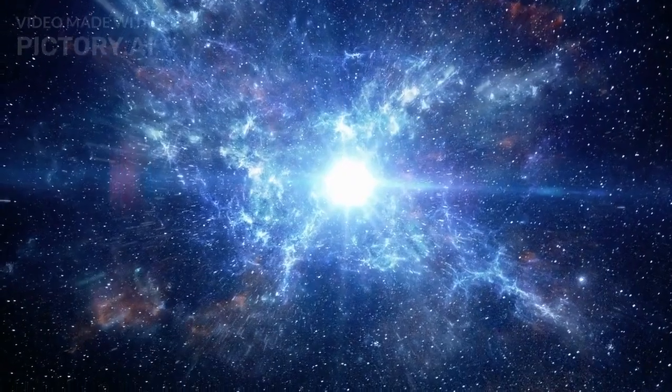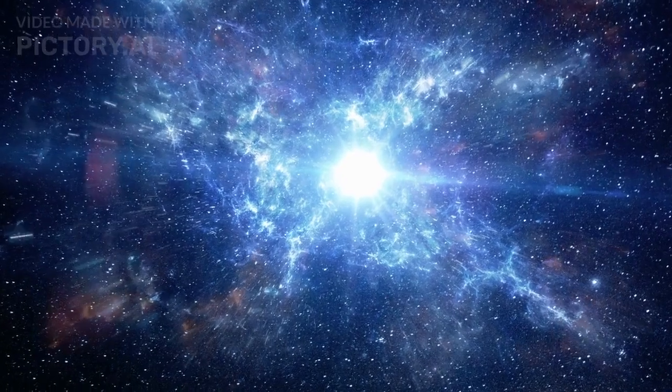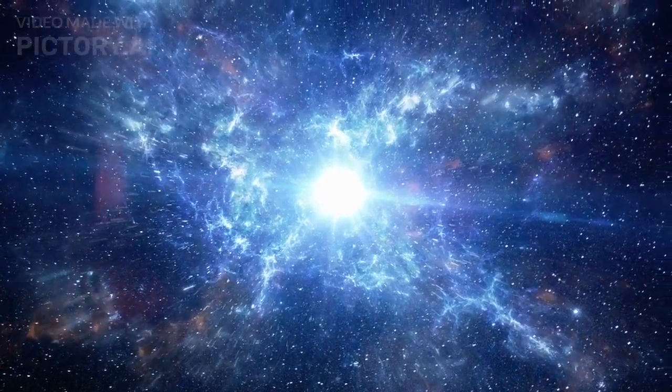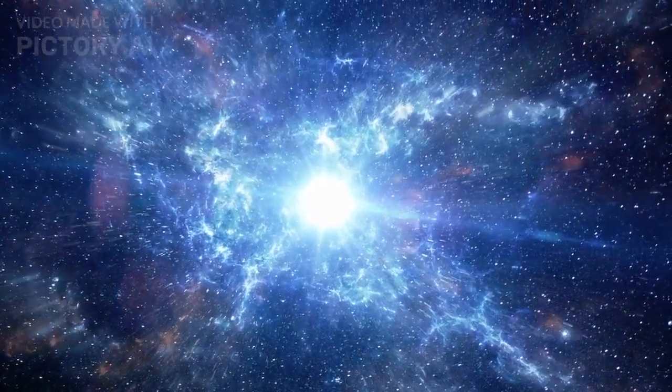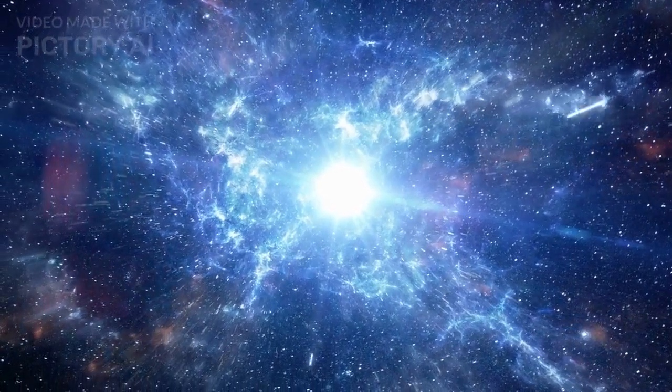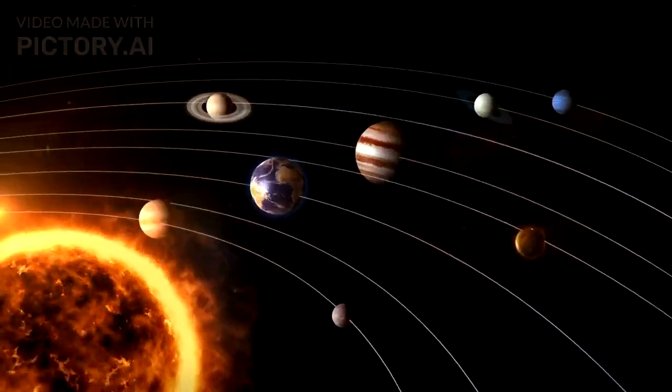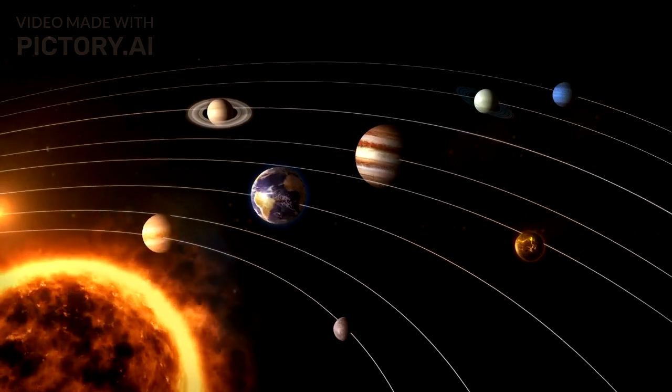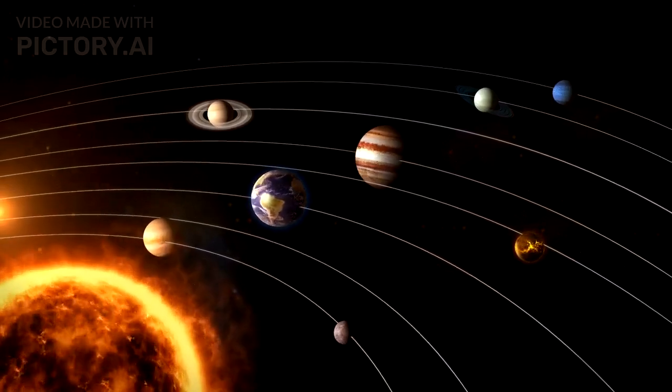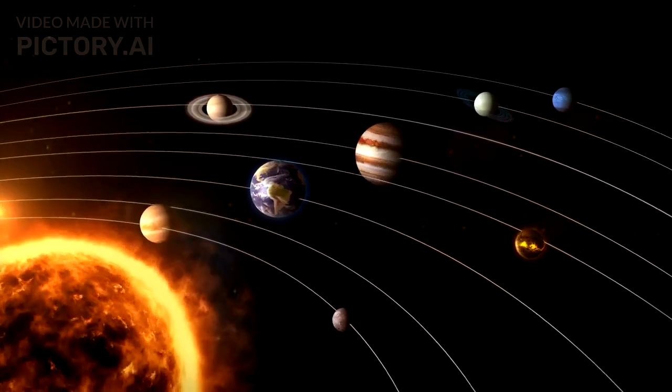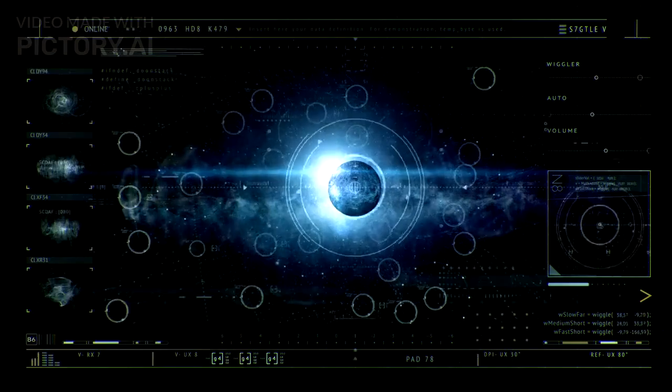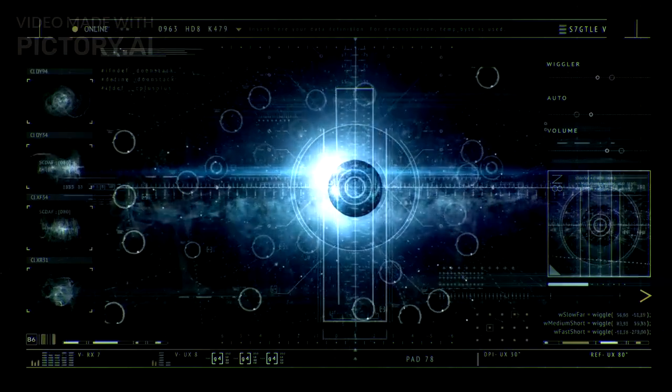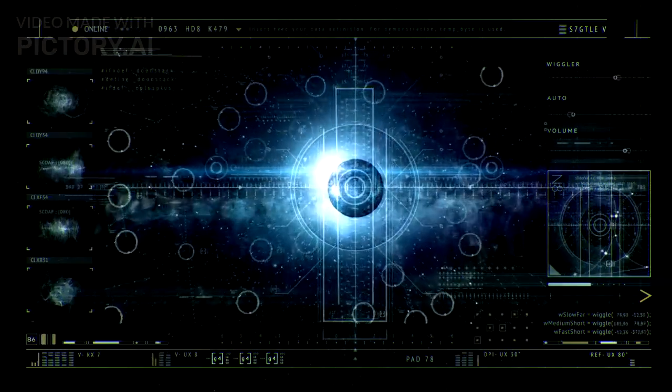To give you a sense of scale, if the Sun were the size of a beach ball, Betelgeuse would be a towering structure, perhaps the size of a large building. If we were to replace our Sun with Betelgeuse, it would engulf the orbits of Mercury, Venus, Earth, and even Mars. This means that the inner planets of our solar system would be completely swallowed by this gigantic star.